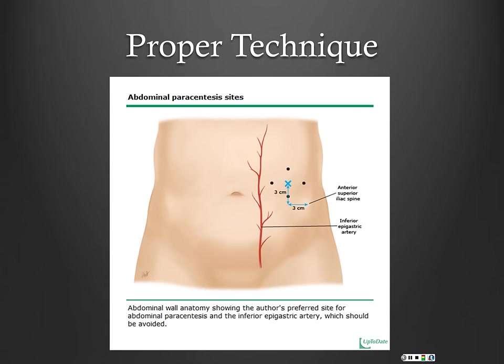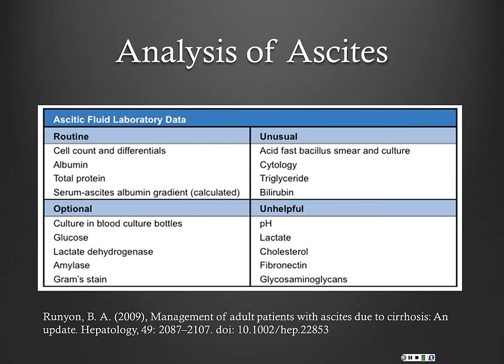INRs were as high as 8.5, platelets were as low as 20,000, and there was not one significant episode of bleeding. So the risk of bleeding, even with an elevated INR, is very low. If you try to get these scheduled under IR guidance, they'll want INR less than 1.7. But at bedside on the ward, particularly for diagnostic, don't worry about their INR or platelets unless platelets are around 4,000.